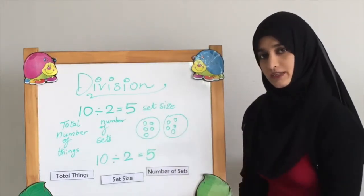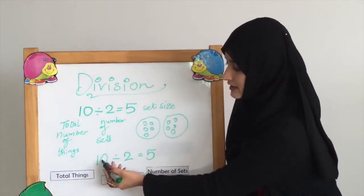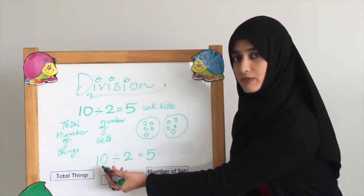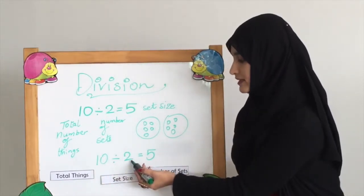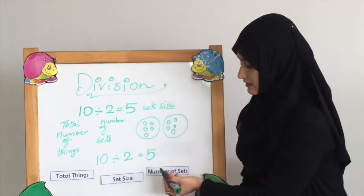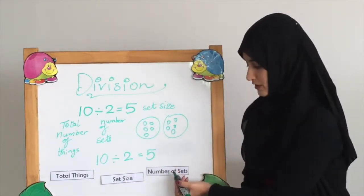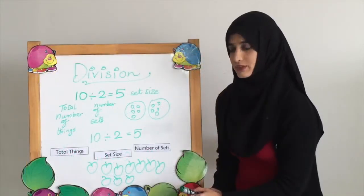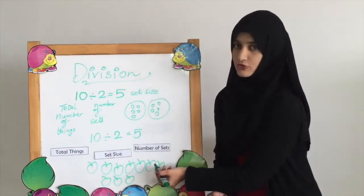In the new method, the first number is the total number of things we have or the number we have to divide. The second number here is the set size, and the last number, which is our answer, is the number of sets we make. In the second method, you will see pictures will be there for you to solve.